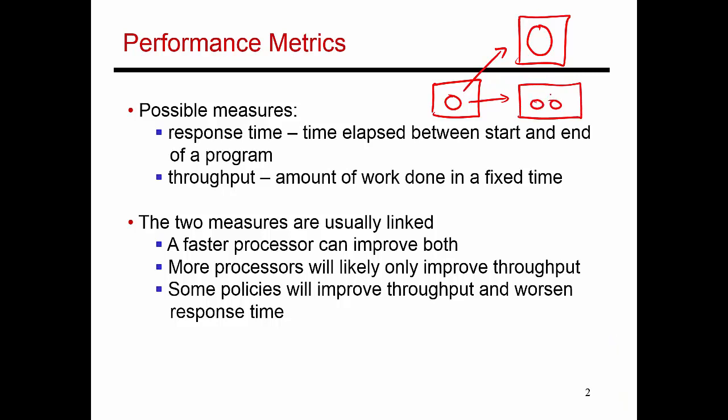If I go with option one, I'm essentially improving the response time of one individual thread. So let's say program A takes five seconds to run over here. When I make that single core much bigger and much better, I'm able to run that program in four seconds.